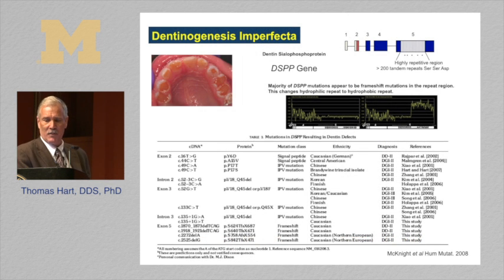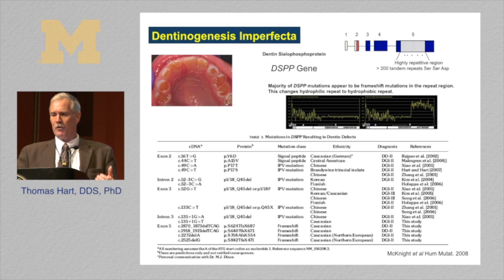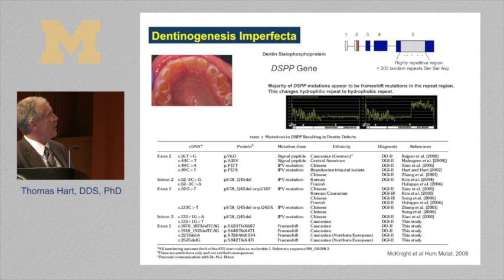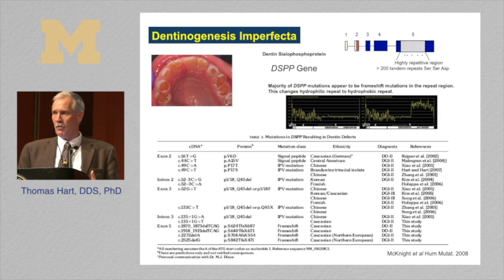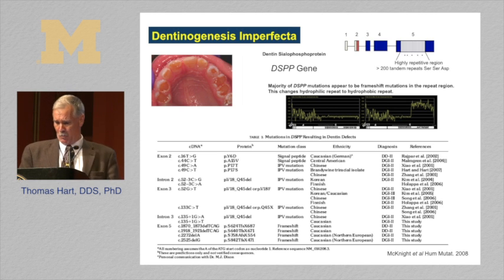With dentinogenesis imperfecta, specifically with DSPP, it was possible to sequence collagen 1A1 in the past for about $5,000, significantly less now. For DSPP, it wasn't possible to sequence the whole gene because there's a highly repetitive area in exon 5 — 200 tandem repeats of serine-serine-aspartic acid — that molecularly just wasn't possible to sequence through. So people would sequence the parts of DSPP they could, and if they didn't find a mutation, reports concluded it must not be DSPP. No — we just weren't sequencing the whole gene.